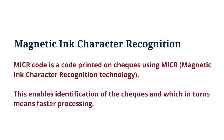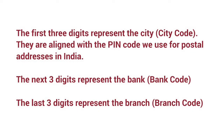What is MICR? MICR code is a code printed on checks using MICR — Magnetic Ink Character Recognition — technology. This enables identification of the checks and allows for faster processing. An MICR code is a nine-digit code that uniquely identifies the bank and branch participating in an electronic clearing system.